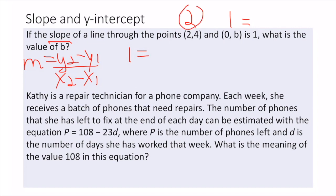Once I plug in everything I know, I just have to solve for the unknown variable. So I have 1 = (4 - b) / 2. This is how most of these questions are set up — you plug numbers into a formula and then solve for the unknown variables.